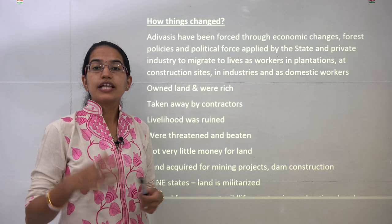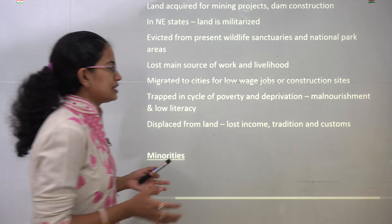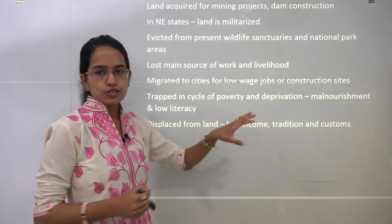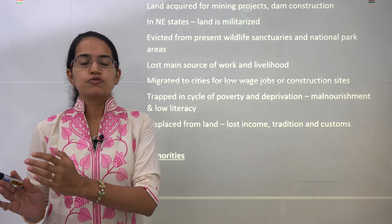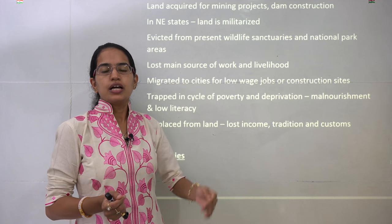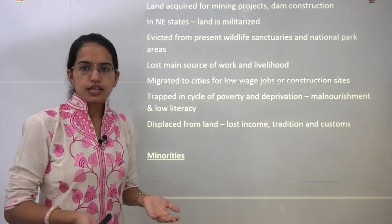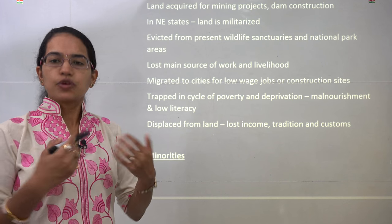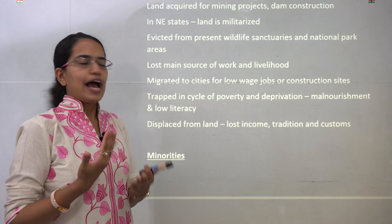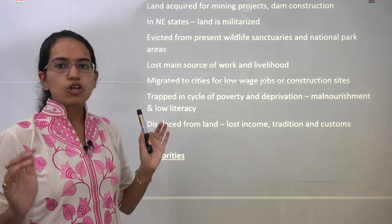Land has been acquired, and in the northeast it has been militarized for military purposes in war-torn areas. Ultimately, tribals get trapped in a cycle of poverty, deprivation, malnutrition, and low literacy. The government has given a category of Scheduled Tribes, where the government officially recognizes these groups and provides certain protections, including advantages in government jobs and promotions through reservation. But more or less, they have been displaced from their land, losing their income, traditions, and customs.